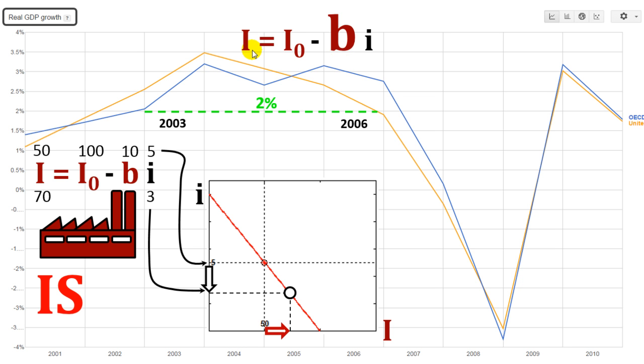Investment was very sensitive to changes in interest rate. So a small decrease in interest rate would encourage people to get engaged in loans for investment. So this b should be a big number.